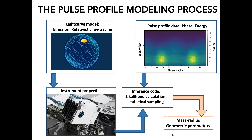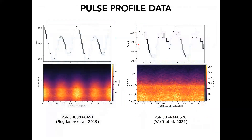Here's the real pulse profile data. These are the two stars we've finished analysis for so far. On the left, PSR J0030 — an isolated pulsar with no binary companion, so we have no idea ahead of time what the mass might be. Two very clear pulses shown here, the pulse profile broken out by energy channel and rotational phase, with a clear double peak structure. This is about 1.9 megaseconds of data — several weeks of data — with the pulsar spinning about 205 Hz, built up over the course of about a year.